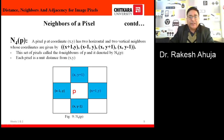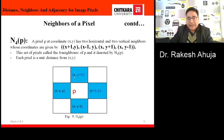First, we will discuss N4(p). Suppose a pixel p is at coordinate (x, y). It has two horizontal pixels, x+1,y and x-1,y, as well as two vertical pixels, x,y+1 and x,y-1. The combination of all these pixels are the 4 neighbors of p, denoted by N4(p). An important point is that each pixel is at unit distance from (x, y).